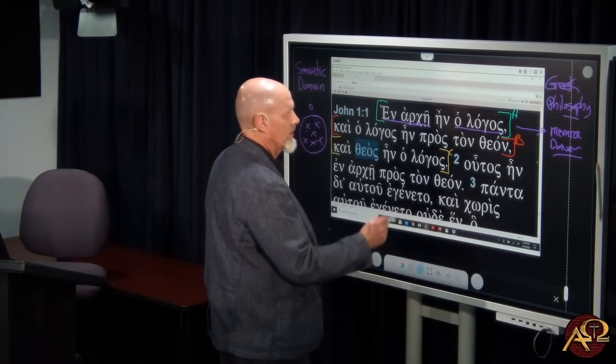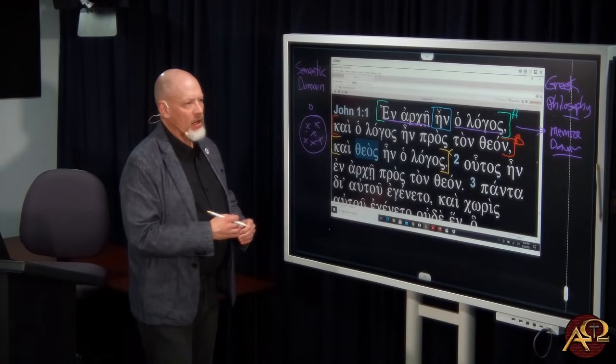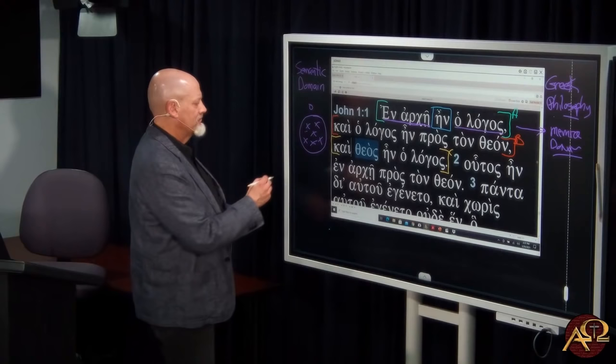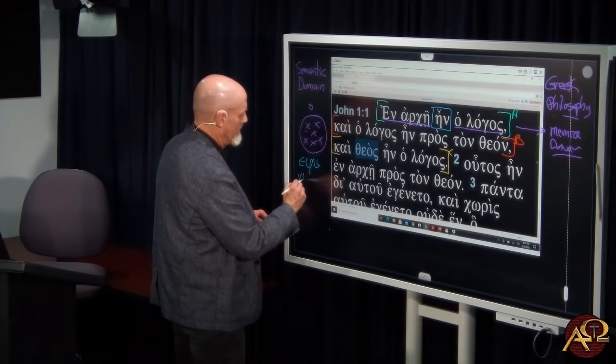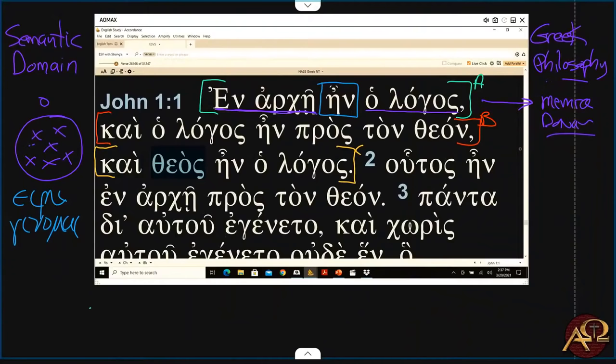Now, here is our verb, ēn. Predicate nouns follow linking verbs. There are two primary verbs of being in Greek. In Greek, you have eimi, and you have ginomai, which very often is found in the aorist as egeneto. And you can see egeneto right here, for example. There's egeneto right there.